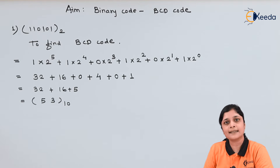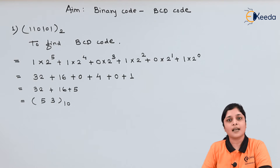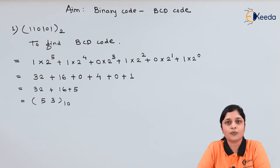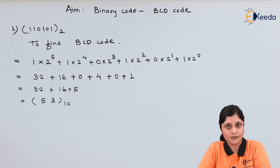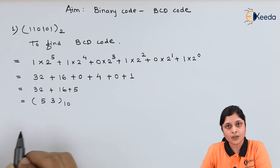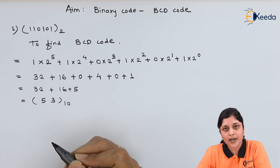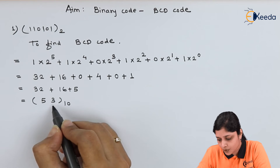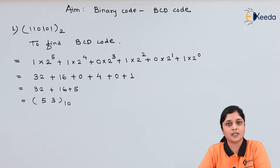The next step is to convert this decimal number into BCD code. As I have explained, in BCD code you have to represent each digit by its BCD equivalent — each digit separately. Now if you focus on 53, how many digits are there? 5 and 3. So separately you have to write the BCD code for 5, and separately you have to write the BCD code for 3. Then only you will get its BCD equivalent.